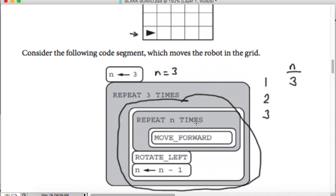Repeat three times move forward: one, two, three, and then rotate left. It'll look up. Then it says n equals n minus 1, which means decrease n by 1. So n becomes 2.